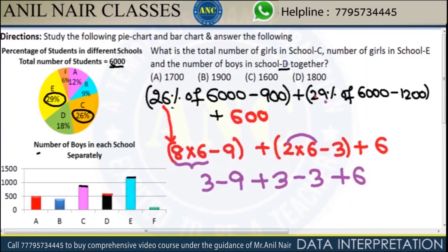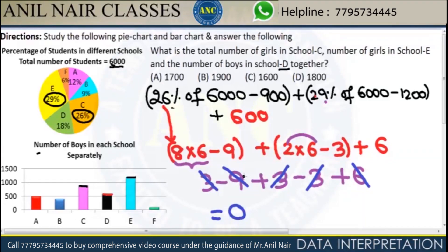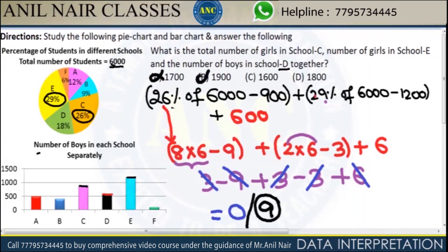If I simplify further, 3 minus 3 cancels. 6 plus 3 is 9. Minus 9 cancels — you get the value 0. Whenever you get 0 in digital sum, 0 is nothing but 9 in digital sum concept. 0 and 9 can be interchanged. That means the digital sum in the answer option should be 9. 1700 is not 9. 1900 is not 9. 1600 is not 9. 1800 is 9.